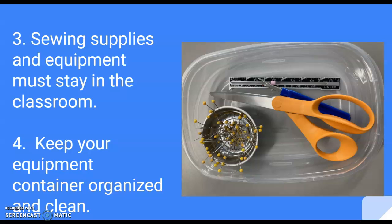You're going to be able to take your sewing unit project or fabric with you, while things like pins, scissors, and other tools will stay in the classroom. You want to keep your equipment container cleaned and organized. You're going to have four different items — your scissors, seam ripper, seam gauge, and your container with pins — kept at your machine. It's your job to make sure that it looks neat and clean every time you leave the classroom.